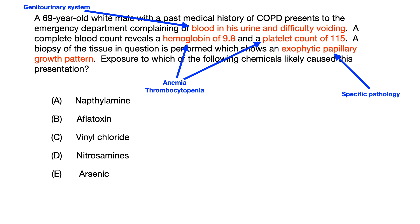Hematuria, anemia, and thrombocytopenia in somebody in this age group with a past medical history of COPD is strongly, strongly suggestive of some type of urinary cancer.